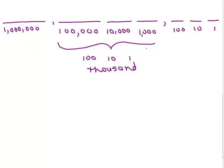In each group there's a ones, tens, and hundreds. In the first group we have ones, tens, hundreds. Then in the thousands group there's 1,000, 10,000, 100,000. Then the millions group has 1,000,000, 10,000,000, 100,000,000, then we go to the billions and trillions, et cetera. There's always this grouping of 3, and that is why we have the comma.